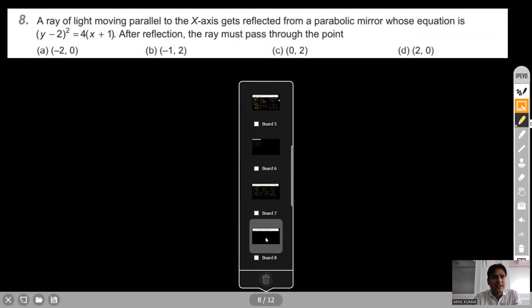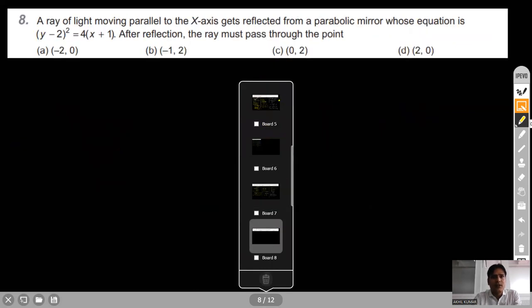Question 8: A ray of light moving parallel to the x-axis gets reflected from a parabolic mirror whose equation is (y − 2)² = ...